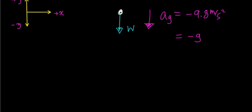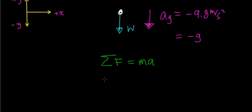Looking at Newton's second law: if you add up the forces acting on this object, it's going to equal the mass of the object times the acceleration. Now this force is acting in the downward direction, so when you write the force, you have to take into account that direction. It's acting downward, so I'm going to write it as minus w. The only force is the weight force, acting in the downward direction, indicated by this negative sign.